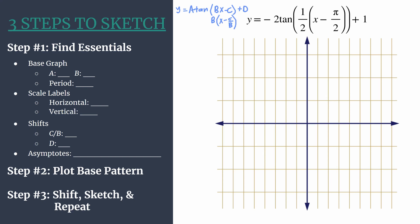Alright, so let's jump in. Step 1, we'll find our essentials starting first with our base graph information. So we see a is our coefficient in front of tangent, so that's negative 2. And so that's going to help us with those curve shaping points, what happens between an x intercept and an asymptote.